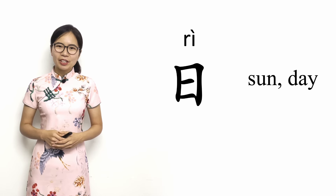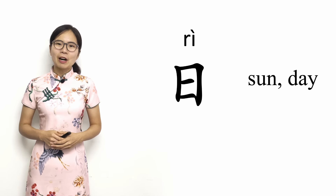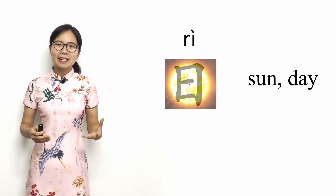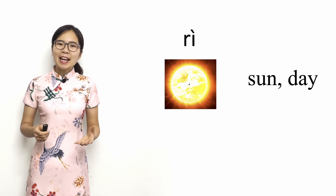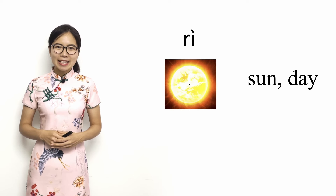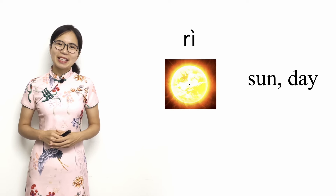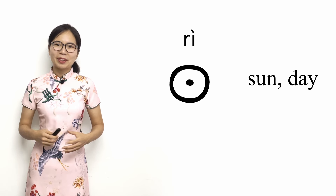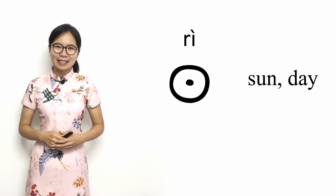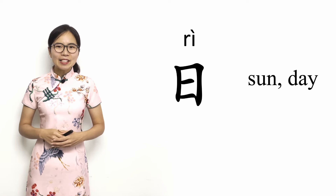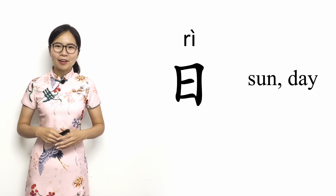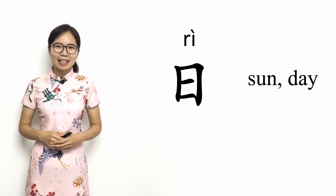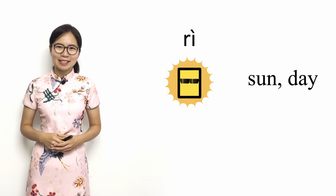The 日 character evolved from a drawing of the sun. In ancient Chinese writing, it was written as a round circle with a black spot in the center. To make it easier to remember, you can imagine this character looking like the sun wearing a pair of sunglasses.